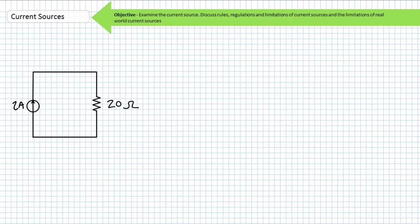In theory, a two-amp current source would push two amps of current through a 20-ohm resistor as easily as it would a 20-mega-ohm resistor, but the real world says differently. We'll discuss limitations of real-world current sources in a moment, but for now we'll just assume the current source behaves exactly like it's supposed to. Regardless of the applied load, the current source pushes the required amount of current through a circuit in the indicated direction.